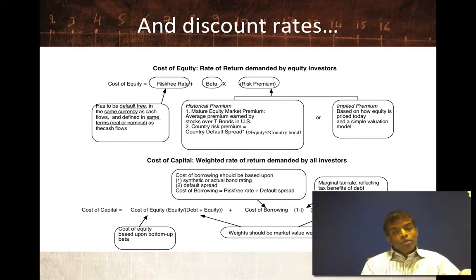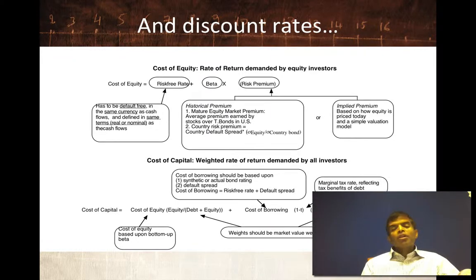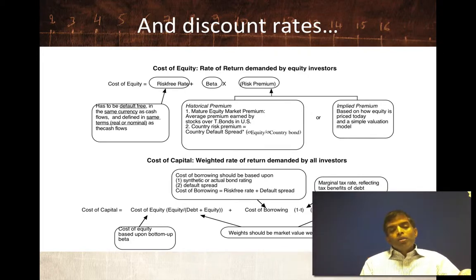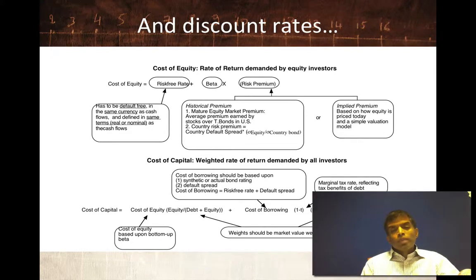When estimating discount rates, the first decision is what currency you're working in. Whichever currency you chose for cash flows must also be the currency for the discount rate. If you're valuing a Mexican company in pesos, your cash flows and discount rate are in pesos. If you value that company in U.S. dollars, both must be in U.S. dollars.